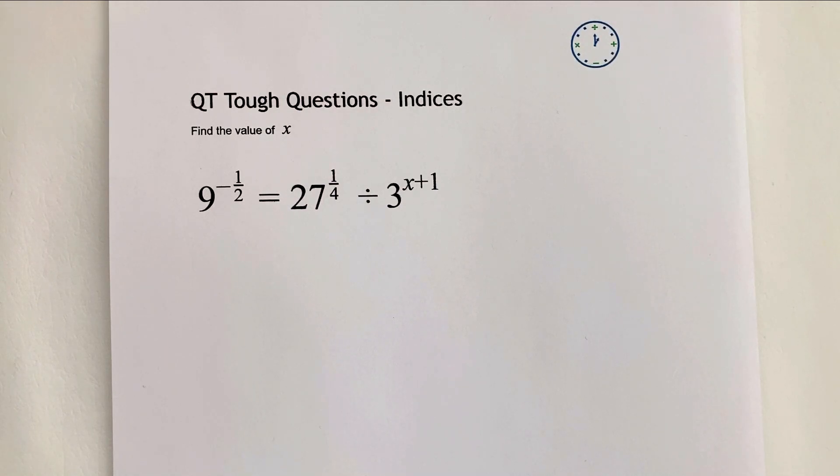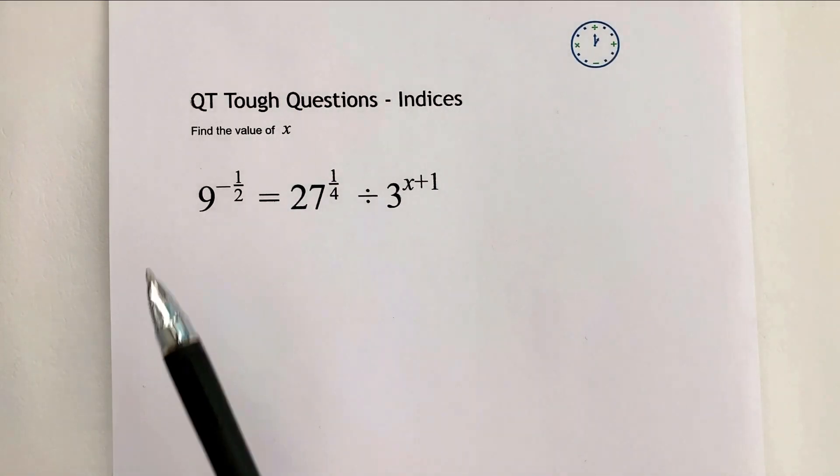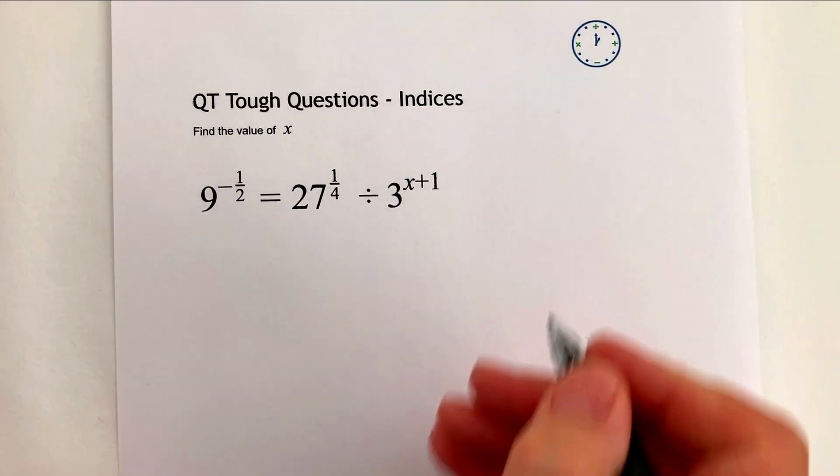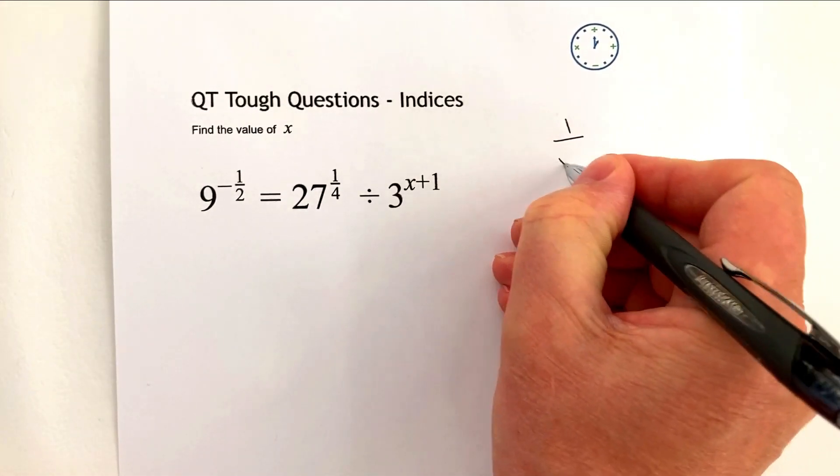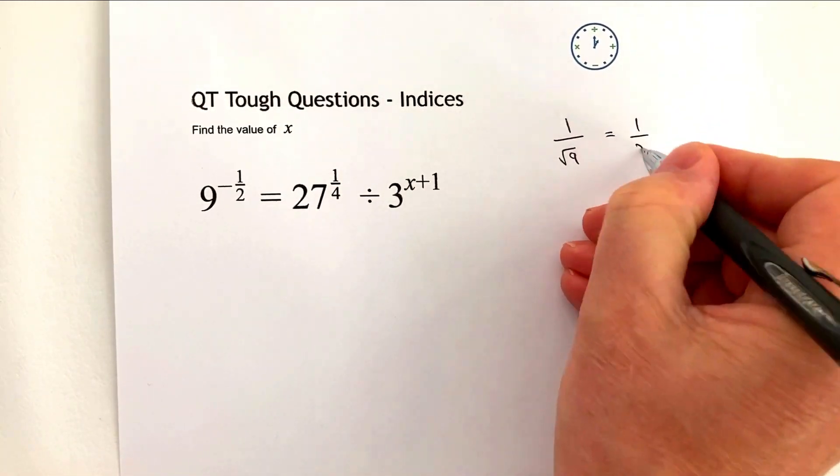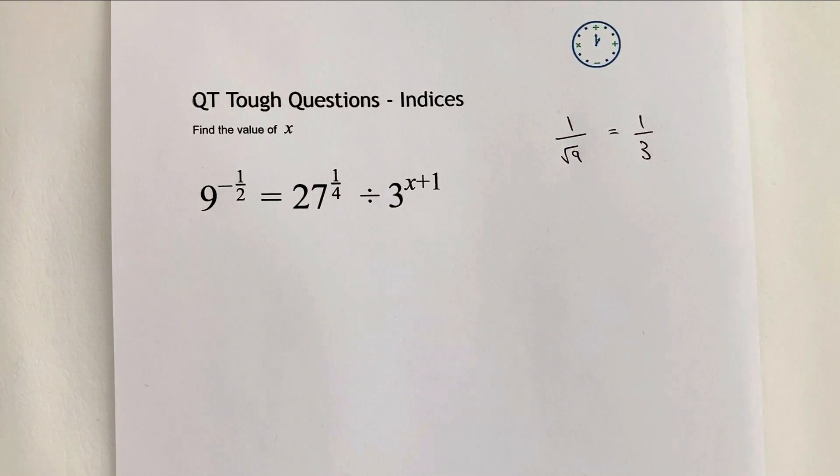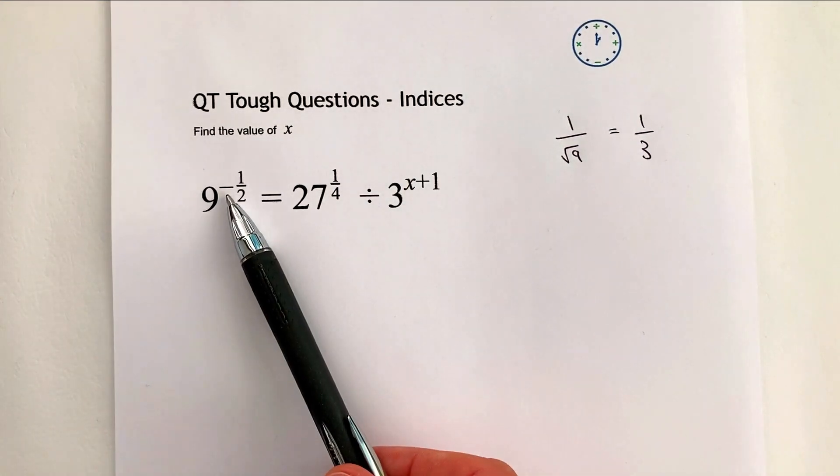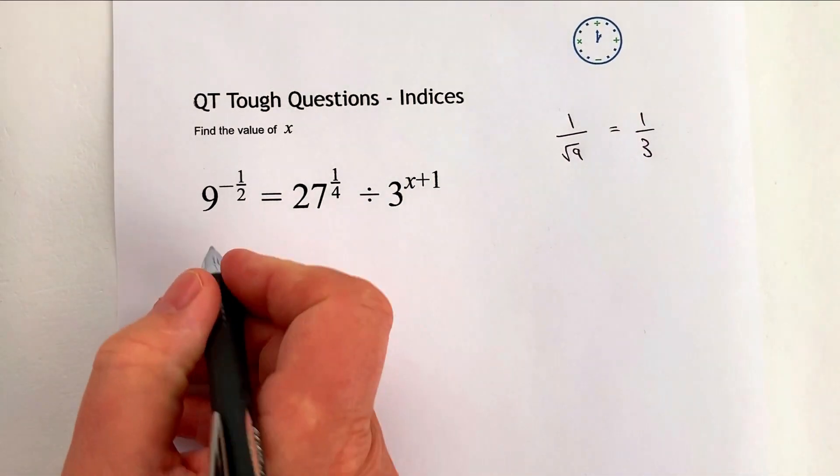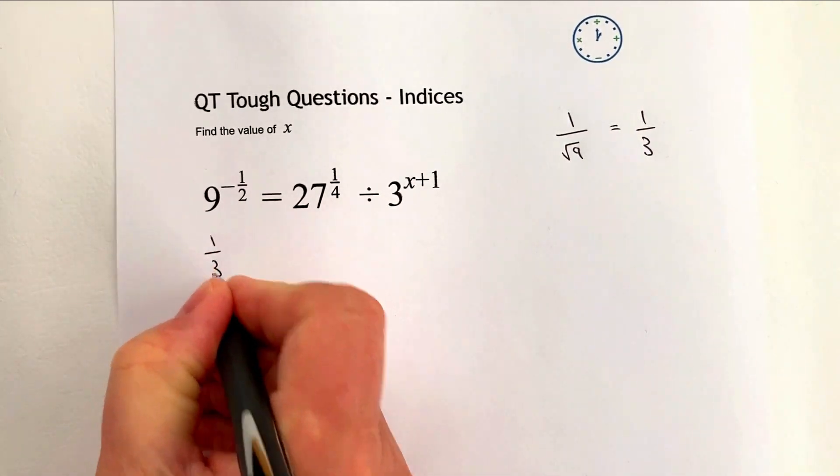So the first thing is, if we look at the left hand side, we've got 9 to the power of negative a half. Well, basically, that's exactly the same as saying 1 over the square root of 9, which is actually 1 over 3. So every time you see something to the power of a half, basically means the square root. And with it being a negative, it means the reciprocal. So actually, this side of the equation, I can write as one third.